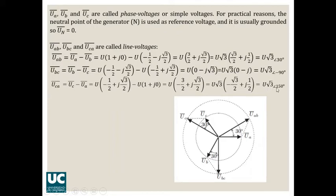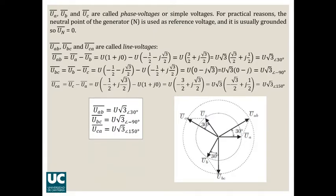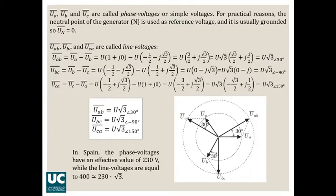So as you can see, the line voltages have an equal absolute value of U multiplied by square root of 3, where U was the absolute value of the phase voltages. These three line voltages are also shifted with an angle of 120 degrees. That means that their sum is also zero, as it happened with the phase voltages and with the currents. In our country, the phase voltages have an effective value of 230 volts, and the line voltages, if we multiply the square root of 3 by 230, we get a value of approximately 400 volts.